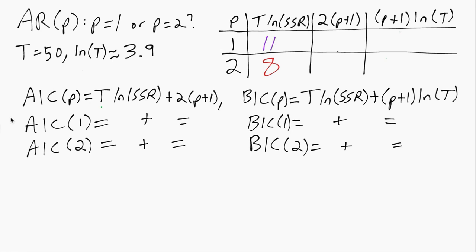So both the AIC and BIC have this T log SSR term, where SSR stands for Sum of Squared Residuals, and that will be larger if there's a worse fit to the data, and if there's a better fit it will be smaller, closer to zero.